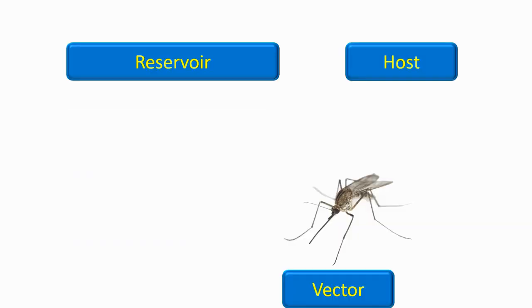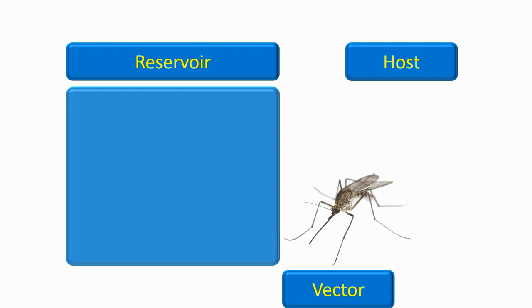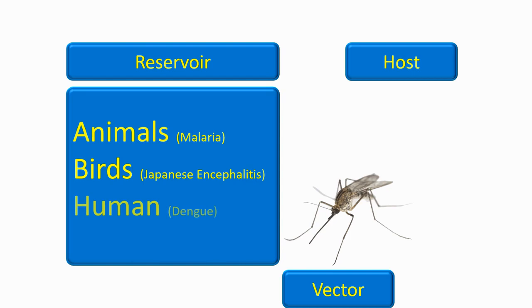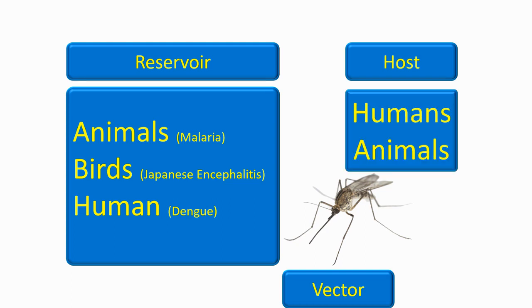In order to be called a vector, the living organism has to acquire the disease pathogen from the reservoir — that can be an animal, bird, or an infected human — and then carry the pathogen in its own body to transmit it to another susceptible host, which can be a human or an animal.